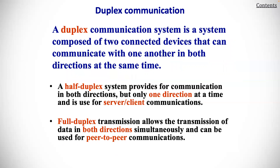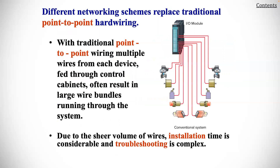You can have duplex communication that allows for communication in both directions, or half duplex where you can only go one direction at a time. Half duplex uses one dedicated line, while full duplex means you have two dedicated ways of communicating at the same time.